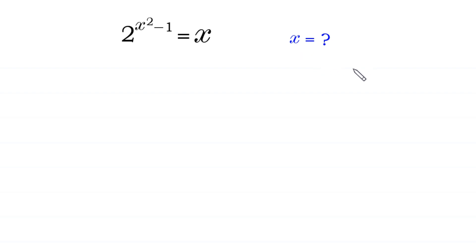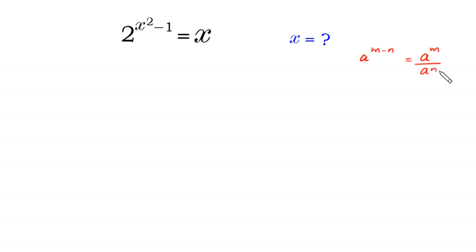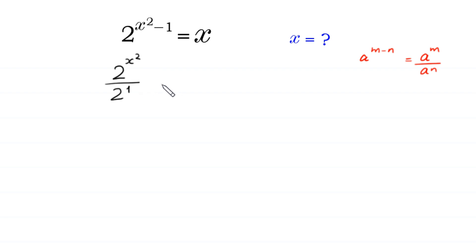According to this property of exponents, a to the power m minus n is equal to a to the power m over a to the power n. We can write 2 to the power x squared minus 1 as 2 to the power x squared over 2 to the power 1, which is equal to x.